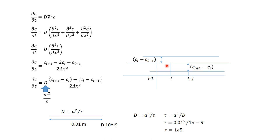Try to understand this physically. Along the direction from bottom to top, say concentration increases from low to high. At the i-th grid point the concentration is c_i, at the (i−1)-th point it is c_{i−1}, and at the (i+1)-th point it is c_{i+1}. Visualizing: at i it is c_i, at i+1 it is c_{i+1}, and at i−1 it is c_{i−1}.